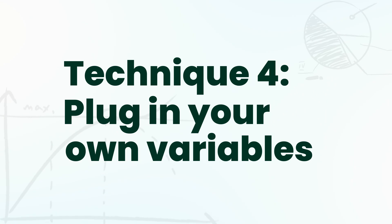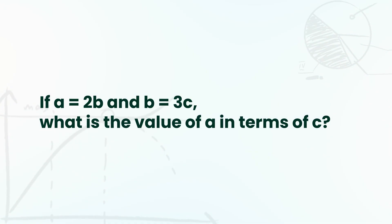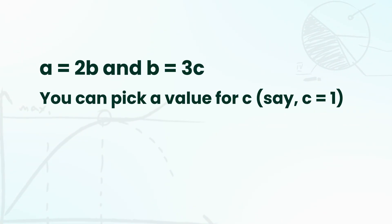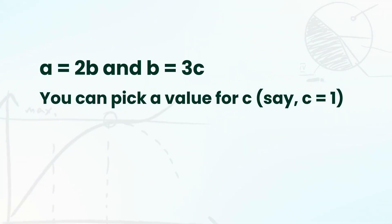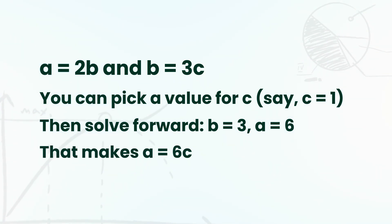Technique number four: plug in your own variables. Some SAT questions present equations using variables with no real numbers. Instead of solving everything symbolically, try plugging in your own values. For example, if a equals 2b and b equals 3c, what is the value of a in terms of c? You can pick c equals 1, so b equals 3, a equals 6, giving you a equals 6c. This is especially helpful on proportion or ratio problems.